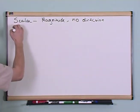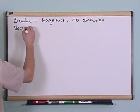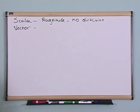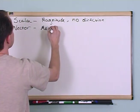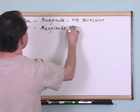A vector is kind of like a scalar except it has magnitude and direction.